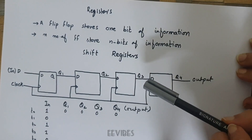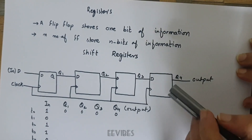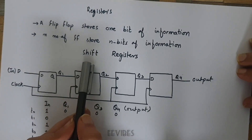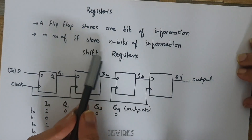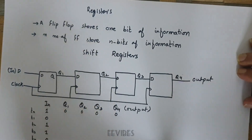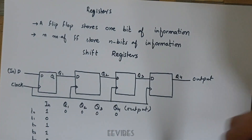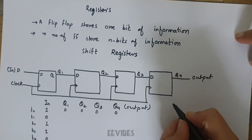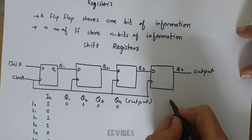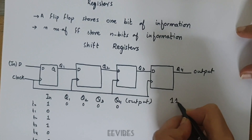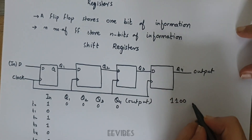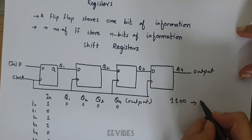Now let's see what shift registers are. Before getting the idea of what a shift register is, let's consider the operation of shifting in digital electronics or digital logic design. Let's say I have a number 1 1 0 0 1 1 0 0 — we know its decimal equivalent is 12.